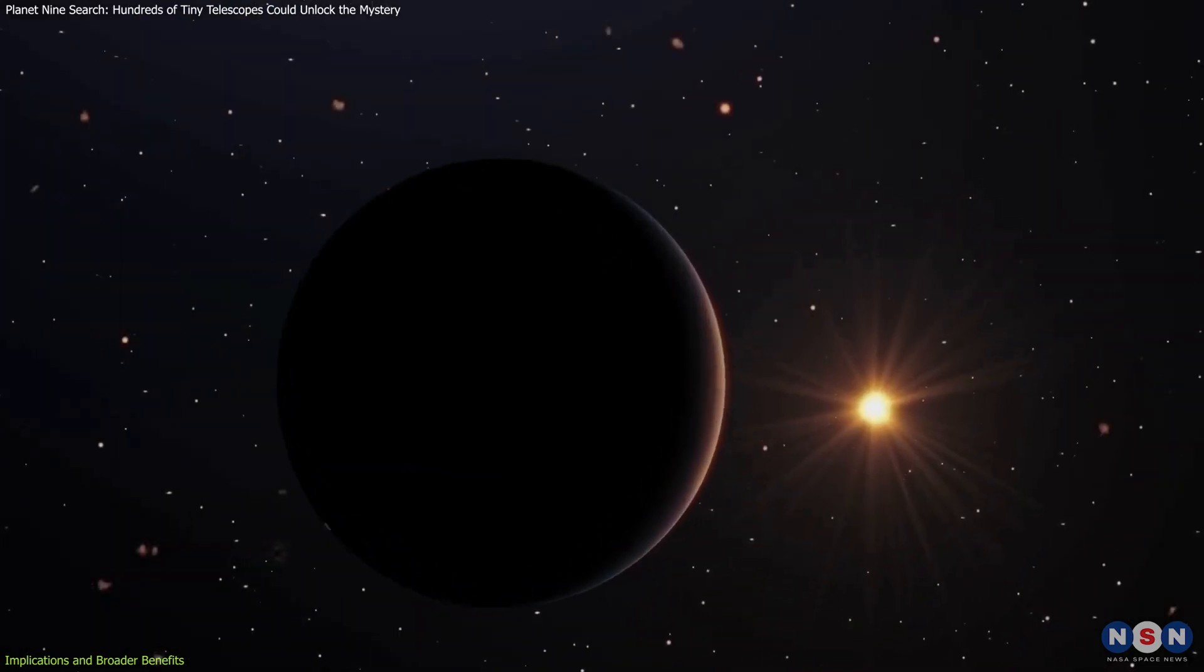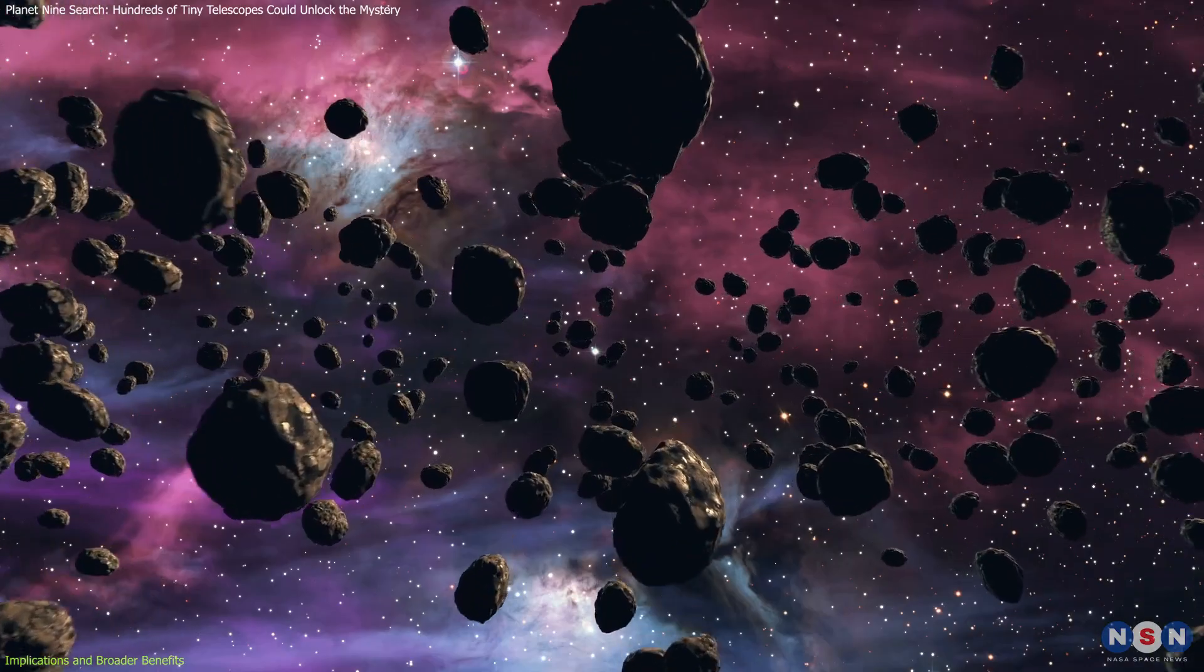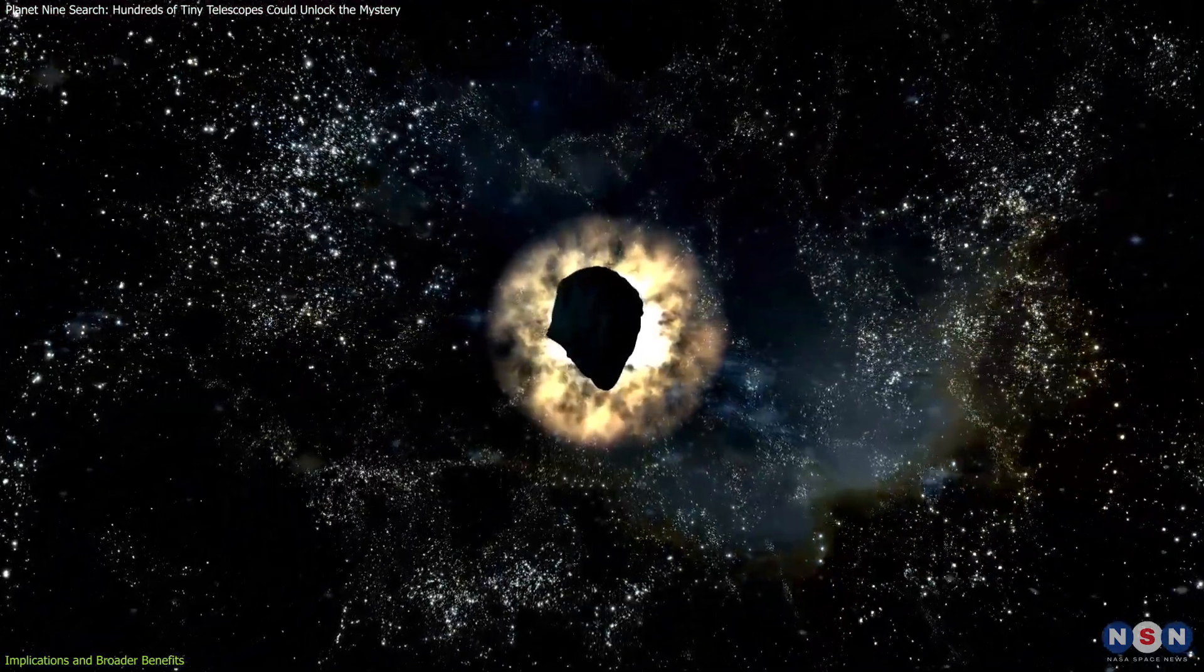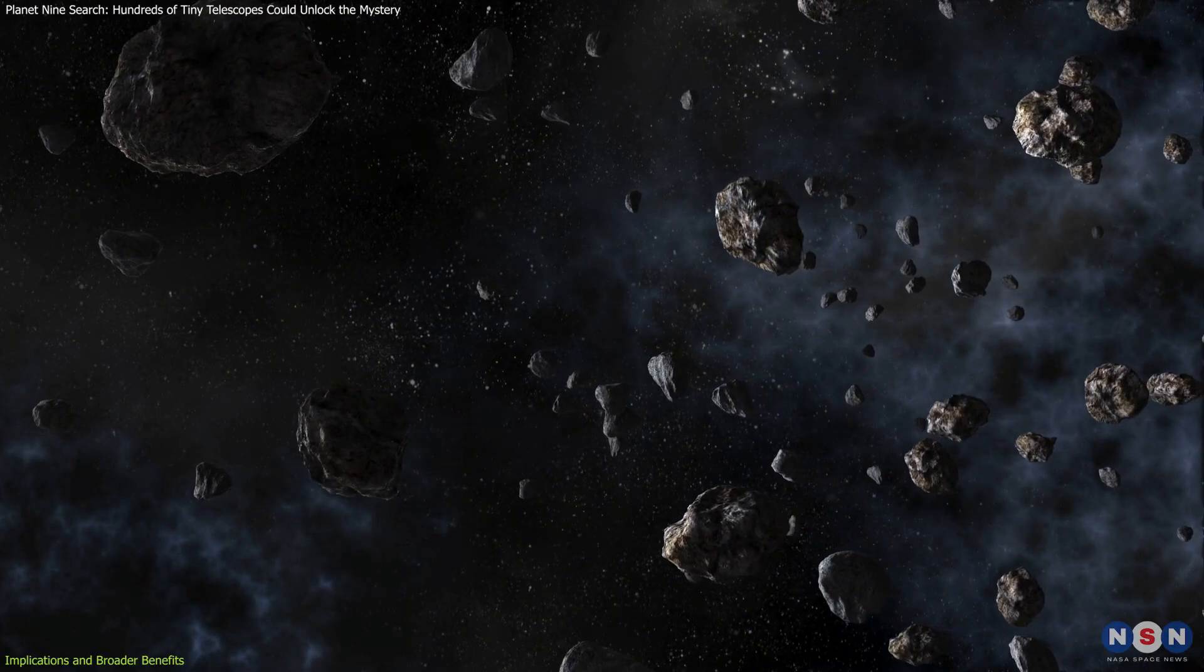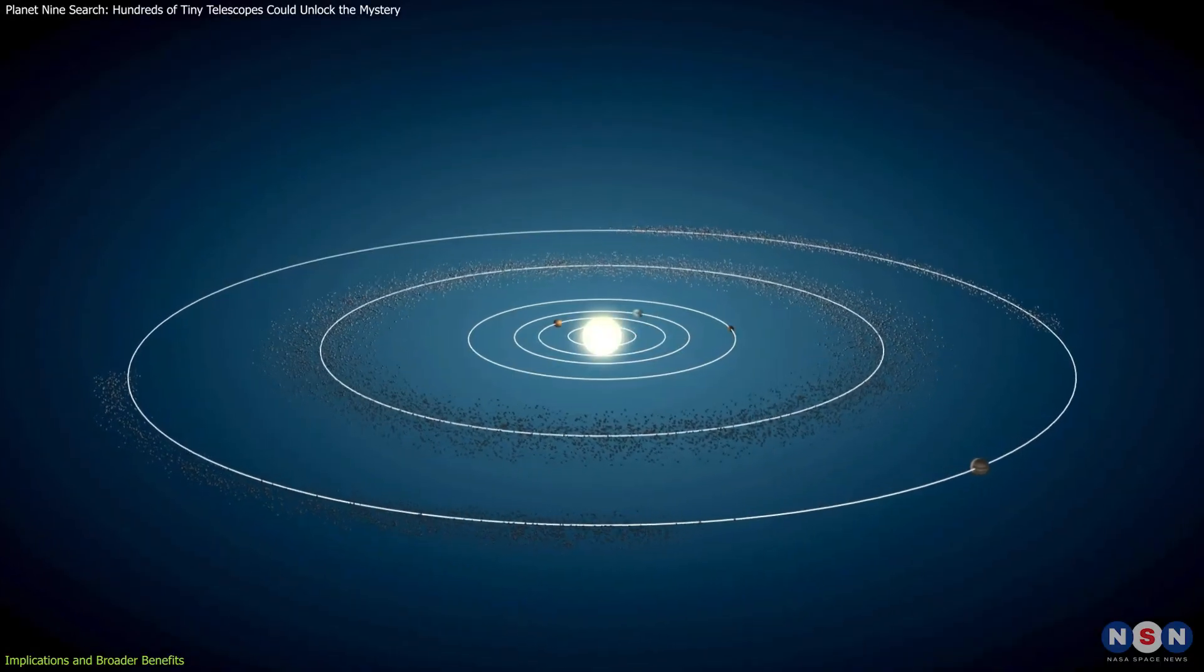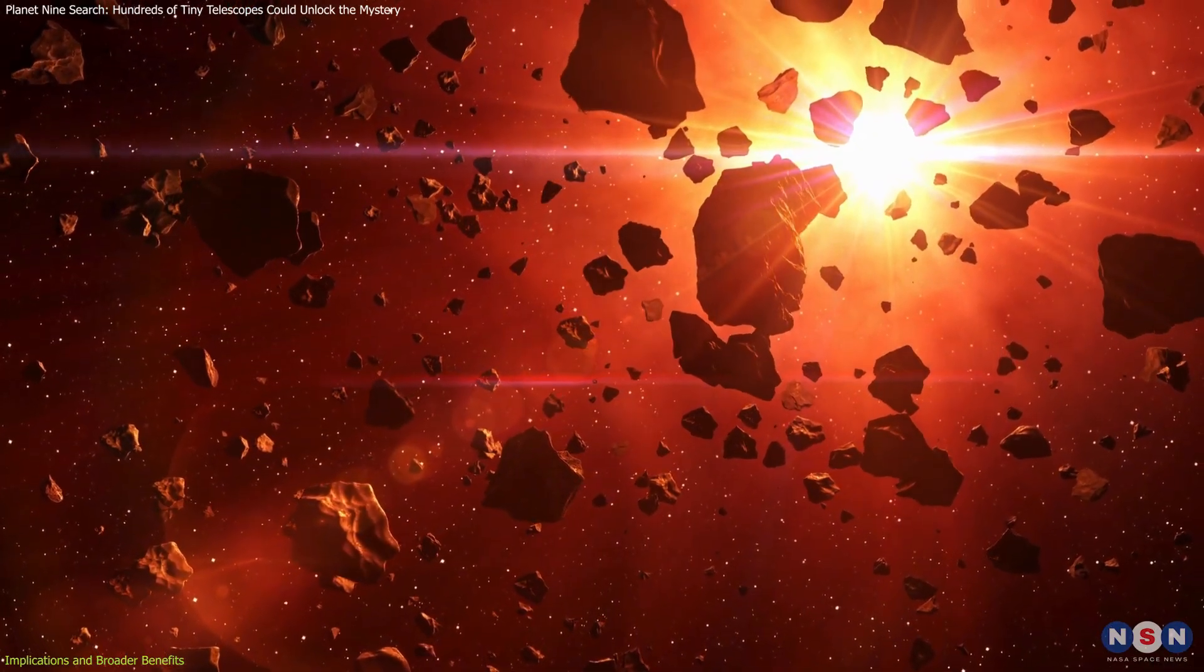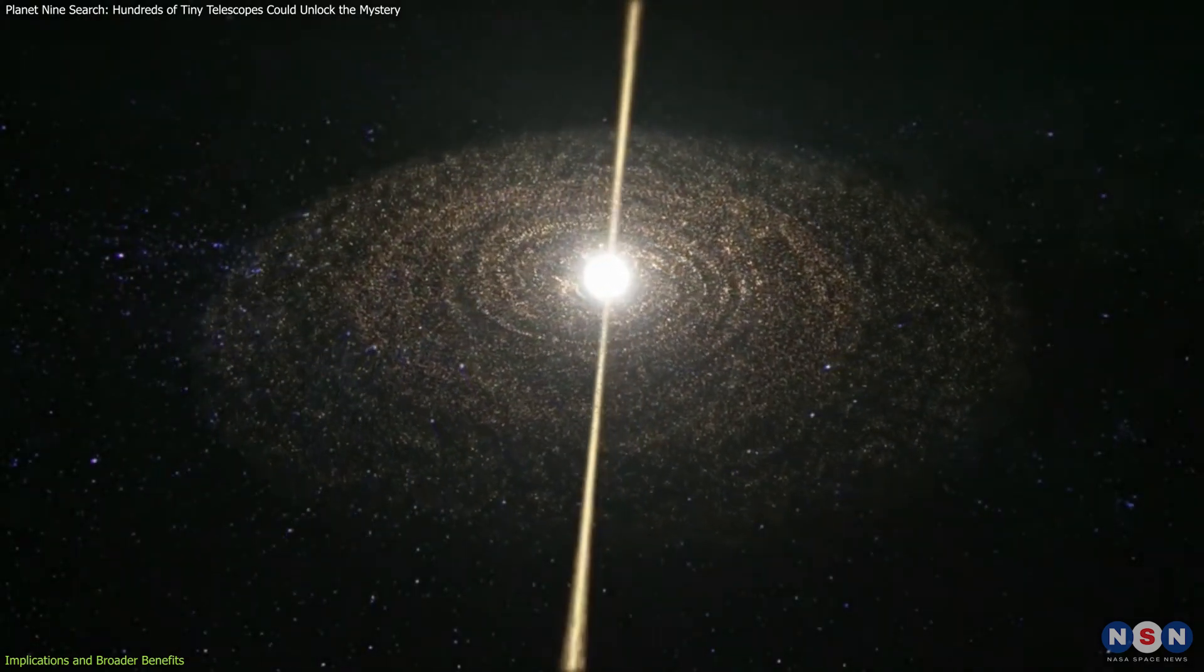Beyond the search for Planet 9, the array has the potential to uncover thousands of new trans-Neptunian objects, greatly expanding the database of known distant solar system bodies. With this expanded dataset, astronomers can study the distribution, composition, and orbital characteristics of TNOs in unprecedented detail. This could shed light on the processes that shape the outer solar system and provide a clearer picture of its evolutionary history.